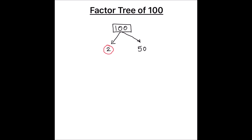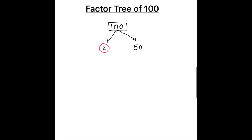Now we are going to write the two factors of fifty. We keep on writing the numbers into smaller factors until we get a prime factor or one. So let's break down fifty — fifty is an even number, we can divide it into two and twenty-five.